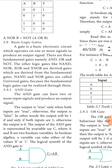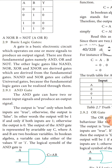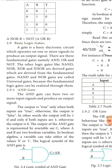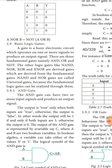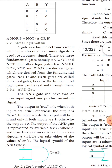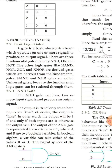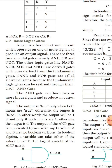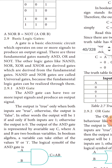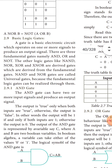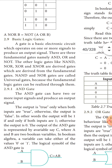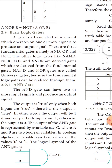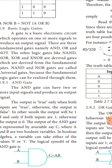The gates NAND, NOR, XOR, and XNOR are called derivative gates, as they are derived from the fundamental gates. NAND and NOR gates are called universal gates because fundamental logic can be realized through them. XOR and XNOR are also derivative gates but are not universal gates.